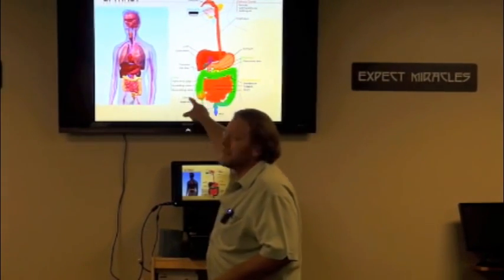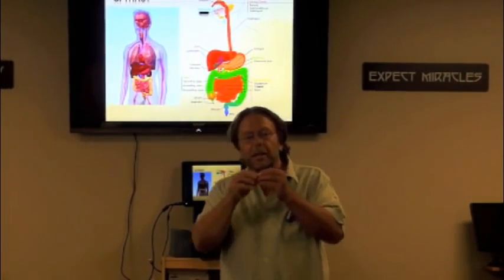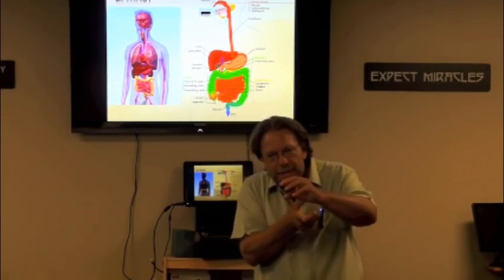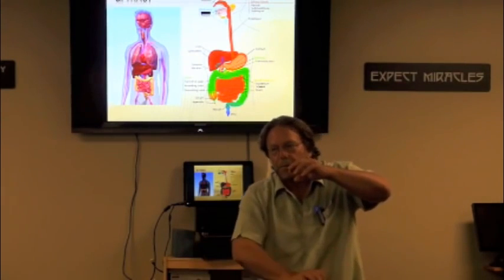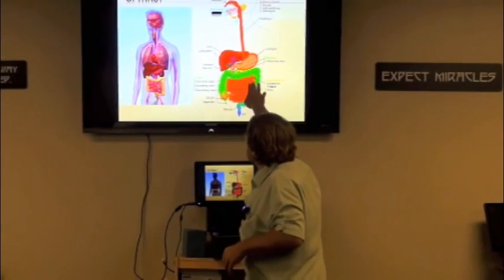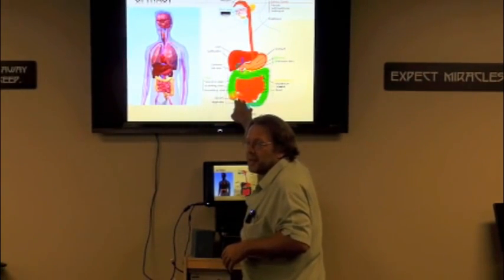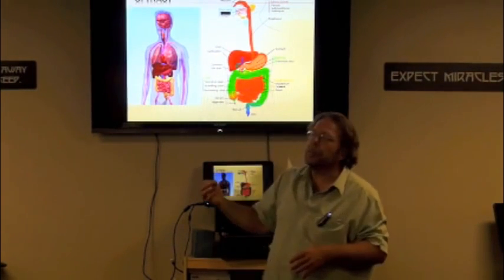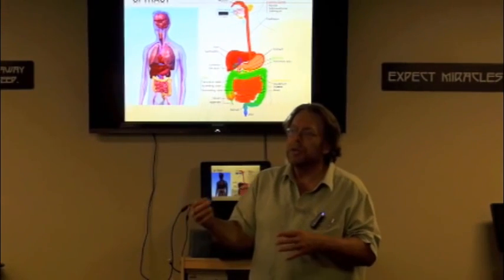But then when it leaves the stomach it's super acidic and right next to the stomach calcium and iron are absorbed. Then a little bit further you get the C vitamins. Then way down at the bottom you get the B vitamins. So as the intestinal tract gets less and less acidic, different things are absorbed. Then it hits the colon and that's where 90% of the body's water absorption occurs.